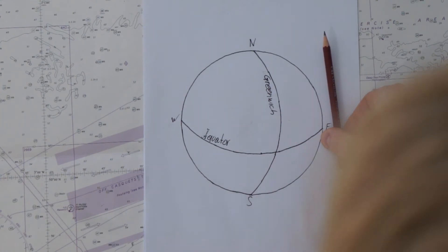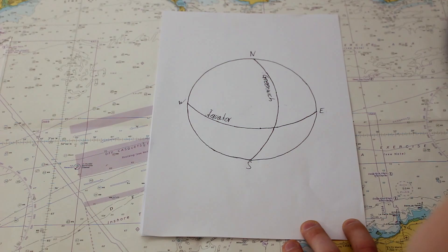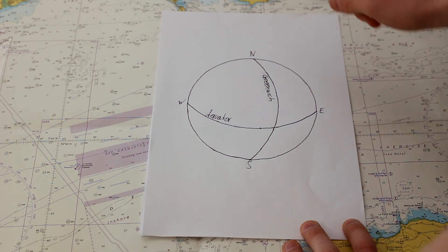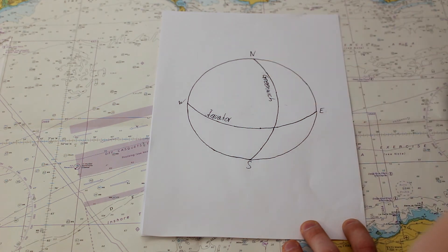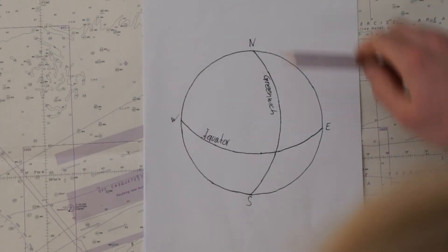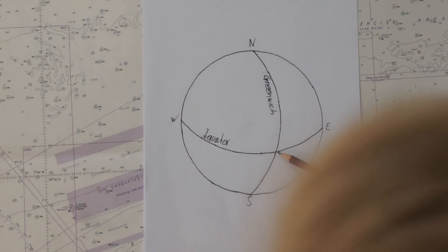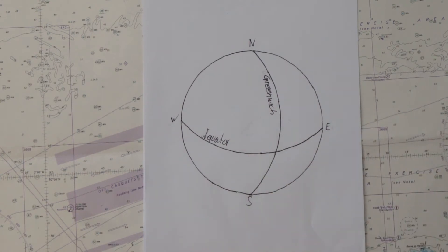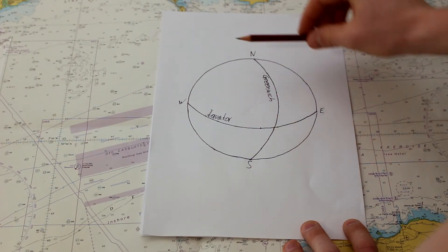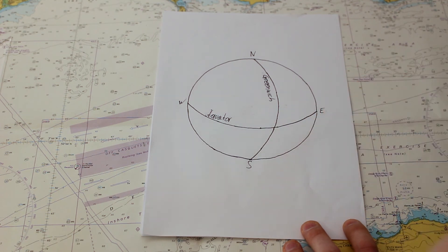As the earth is not flat but a ball, we don't have lines, we have circles which are describing the coordinates. Every circle has 360 degrees but for the longitude it's necessary only to have 180 degrees to the east and 180 degrees to the west. For the latitude 90 degrees to the north and 90 degrees to the south.